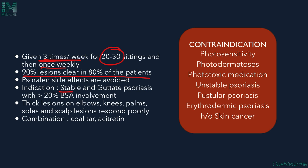Indications for UVB phototherapy in psoriasis include stable psoriasis and guttate psoriasis — the dewdrop-like erythematous papules seen after streptococcal infection. Stable psoriasis means the plaques have not progressed in the last one year. Body surface area involvement should be more than 20%.